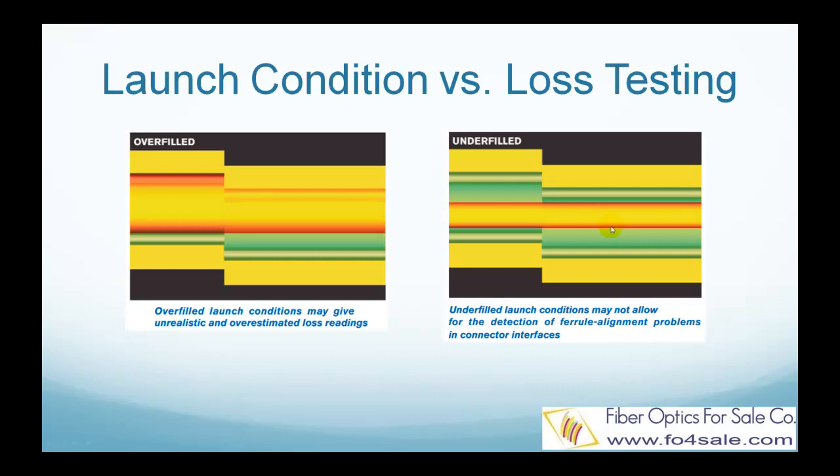Just like Goldilocks — not too hot, not too cold — we need a launch condition that is just right. Just right so it can match real-world Vixel transmitter launch conditions. That is why the industry has developed a dozen launch condition specifications.